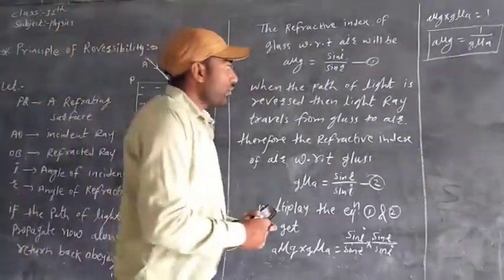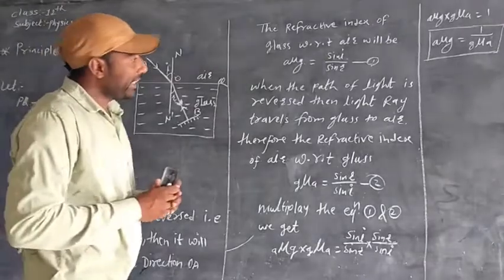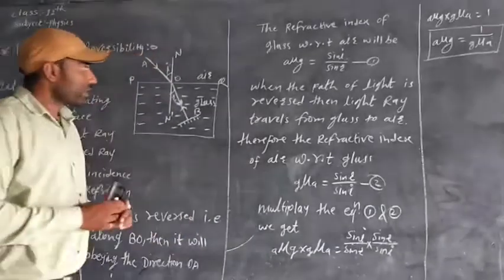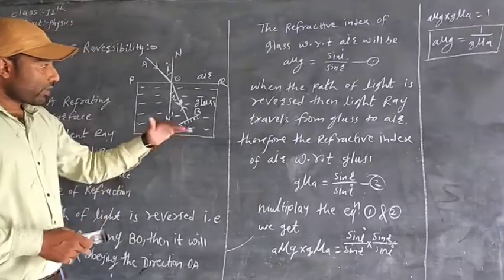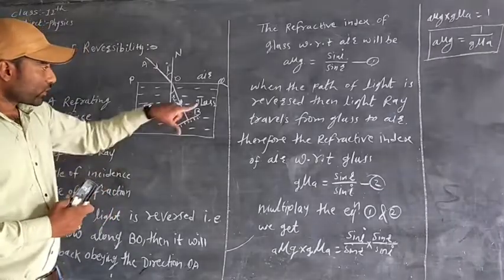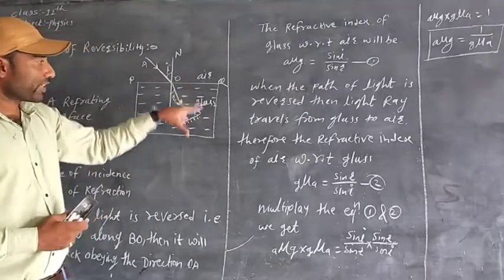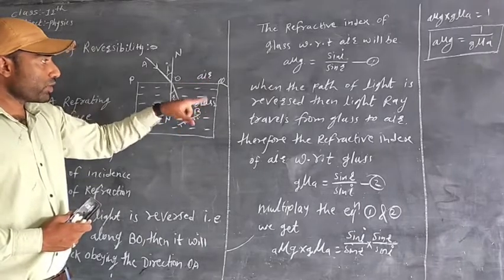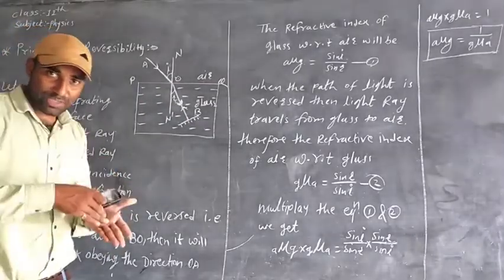When the path of light is reversed, the light ray travels from glass to air. First it was air to glass, so by the principle of reversibility, it now travels from glass to air. When the path is reversed, the angle of incidence and angle of refraction are interchanged.